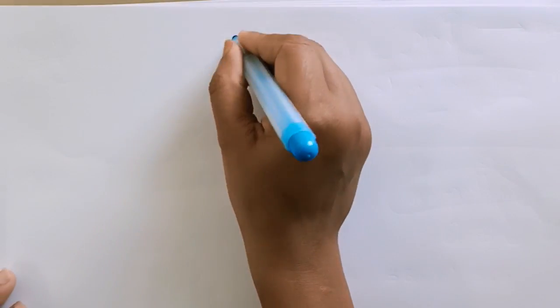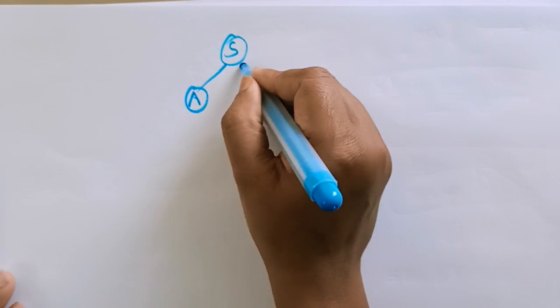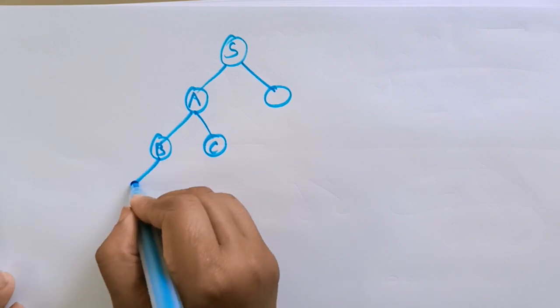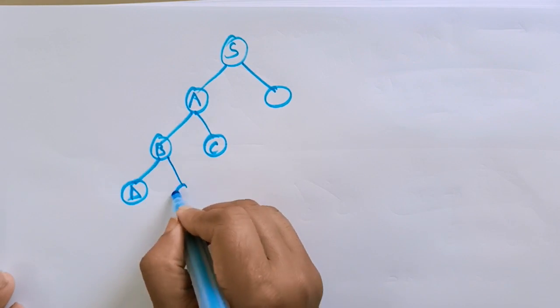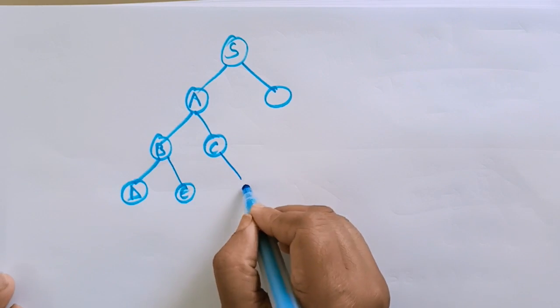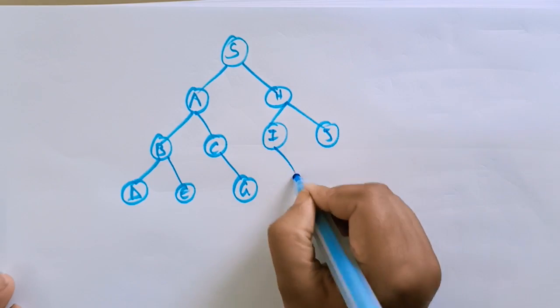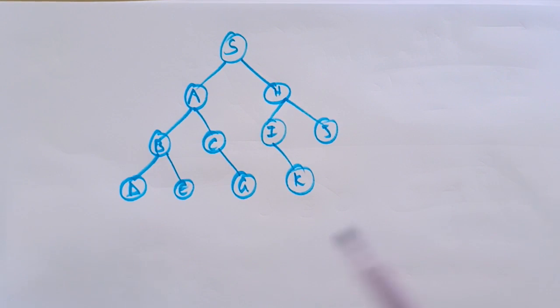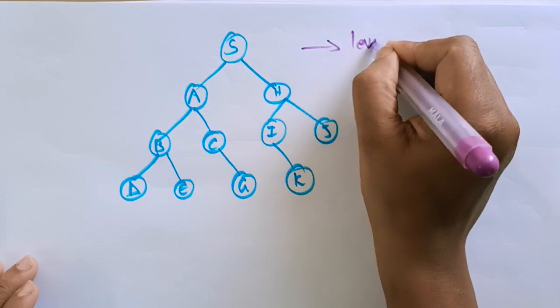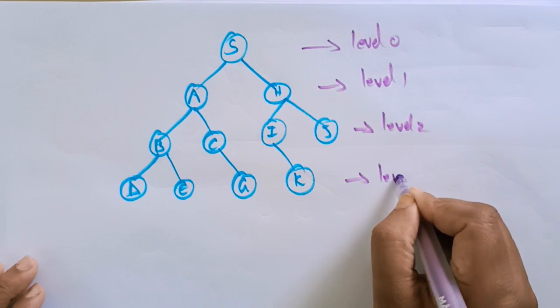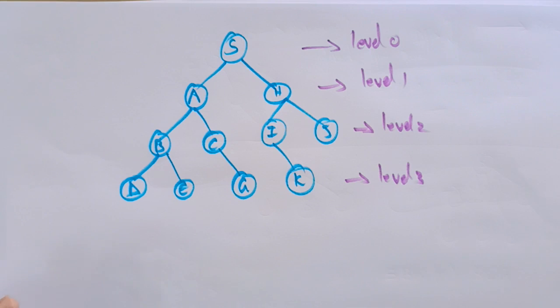The depth first search follows the order: root node, left node, then right node. Let me take an example with nodes S, A, B, C, and further nodes D, E, G, H, I, J, K. There are levels: level 0, level 1, level 2, and level 3.